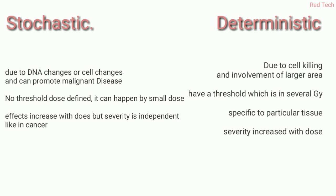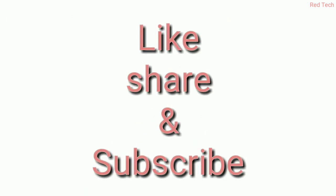In stochastic effects, no threshold is given and effects can happen by a small dose. The effect increases with dose, but severity is independent — the severity of a disease like cancer may be high or low even at a small dose. In deterministic effects, the impact is on a specific area or tissue, and severity increases with dose: the higher the dose, the higher the impact on the body.